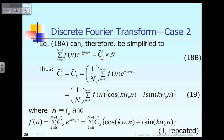From equation 18B we can solve for c̃(l). According to equation 18B, c̃(l) should equal the right-hand side expression. Furthermore, since the index l is the same as the index k, c̃(l) and c̃(k) are the same thing, and both are expressed by that right-hand side equation.